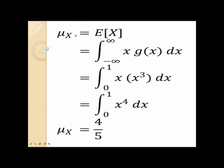We can now calculate the expected value of x, which is equal to the integral from 0 to 1 of x times its corresponding marginal density g of x dx. Since g of x is 4x cubed, this becomes the integral from 0 to 1 of 4x to the fourth dx. After evaluation, the mean of x, which is the expected value of x, is equal to 4 fifths.